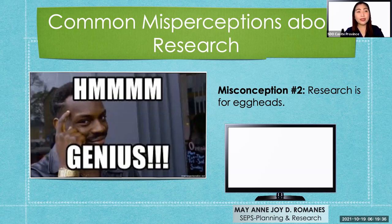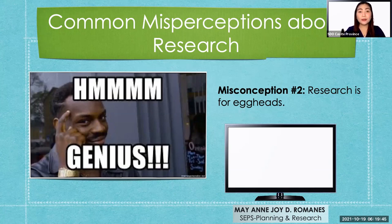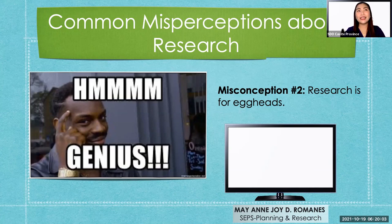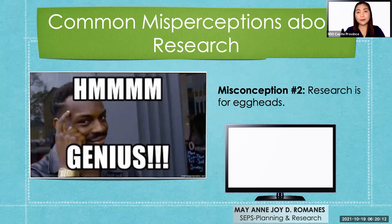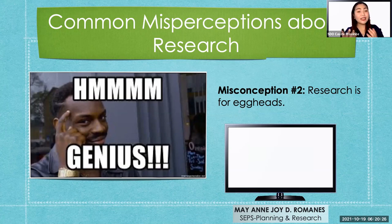Consider magnitude — how many will benefit from your research. Consider urgency — maybe something more urgent needs attention first. Consider feasibility — maybe the research is good but not possible given your resources and community situation. Research is definitely not only for geniuses. Everyone can be a researcher.